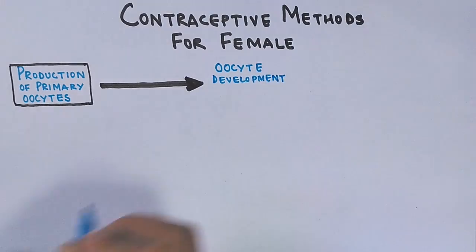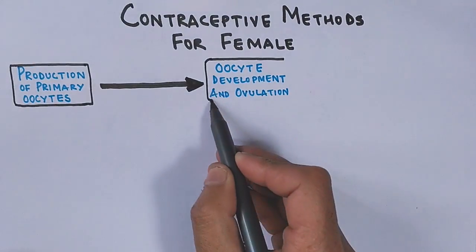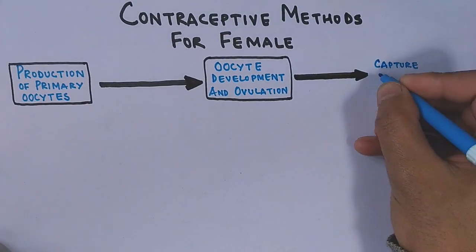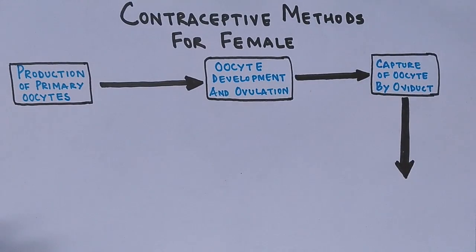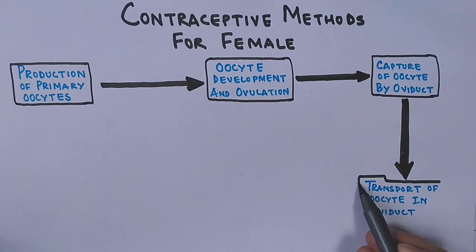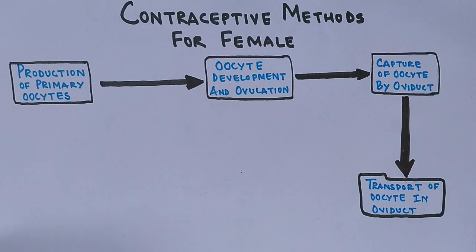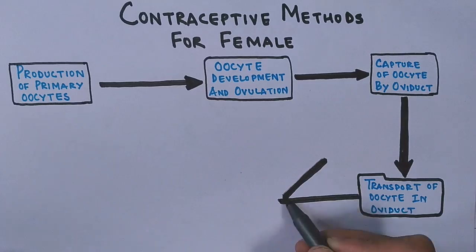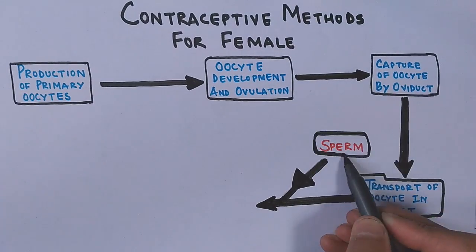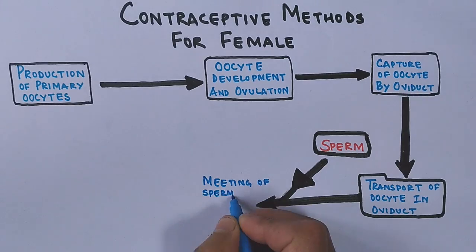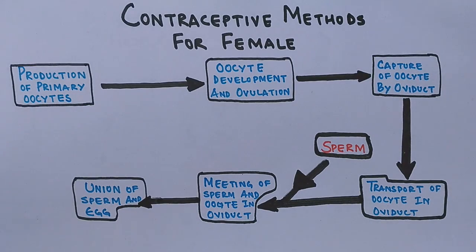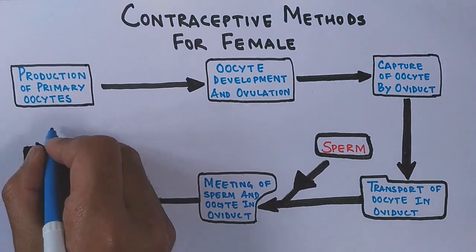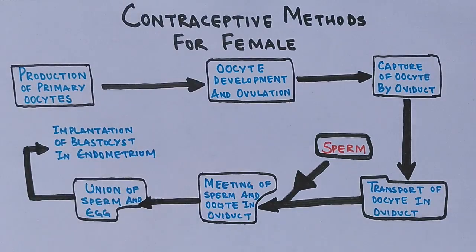After development, ovulation takes place — the release of egg from the ovaries. After that, there is capture of the oocyte by the oviduct, followed by transport of the oocyte through the oviduct, where the sperm meets the egg. So it's a meeting of sperm and oocyte in the oviduct, and after their fusion, there is implantation of the blastocyst in the endometrium.